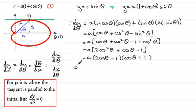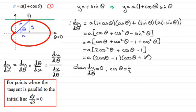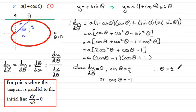When dy/dθ equals zero, either factor equals zero. From the first factor, cos theta equals one half, which gives theta equals plus or minus pi over 3 radians. From the second factor, cos theta equals minus 1, which gives theta equals pi radians.